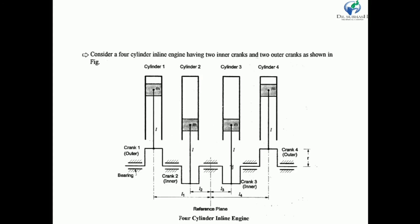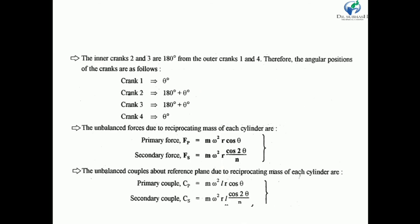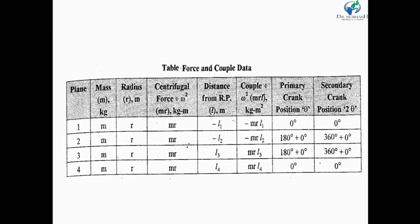For the distance from the reference plane: towards the left direction we consider negative distance and towards the right direction positive distance. The distance between the reference plane and plane 1 is minus L1, plane 2 is minus L2, then L3 and L4. The couple is force times distance, so the couple column entries are: minus m·r·L1, minus m·r·L2, m·r·L3, and m·r·L4.